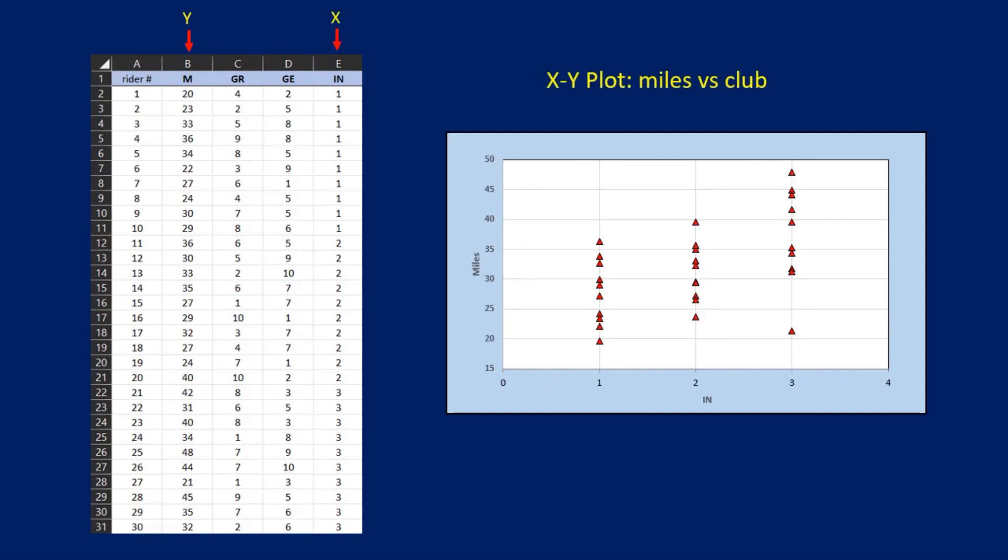And here's the plot of m versus in. There are only three values on the x-axis here: one for the apples, two for the oranges, and three for the grapes. But the trend line is closer to the one we saw for gr scores. So in appears to have nearly as much influence on m as gr does. But here again, there's plenty of overlap. In appears to explain much of the variation in m, but in is by no means the whole story.